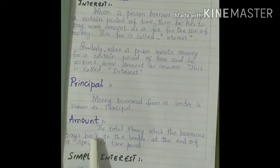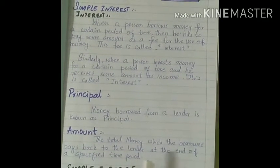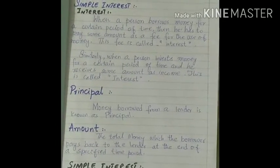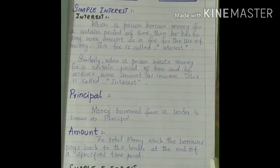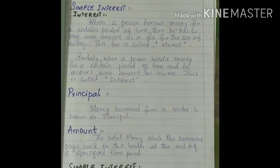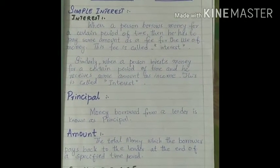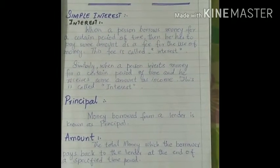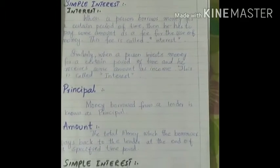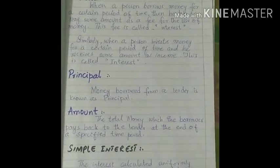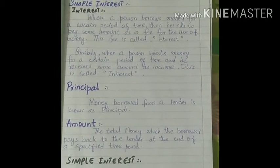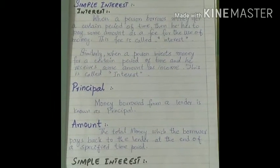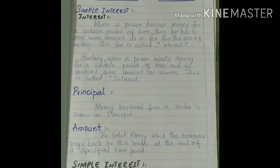Next is amount. What is amount? The total money which the borrower pays back to the lender at the end of a specified time period. It means when we take the principal amount from someone, we have to pay back the principal plus the interest. Now, what is simple interest? The interest calculated uniformly on the original principal throughout the loan period is called simple interest.